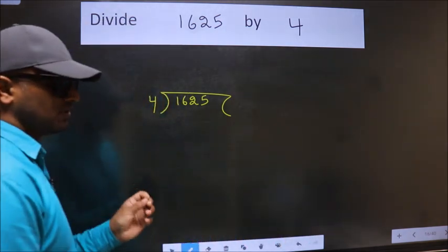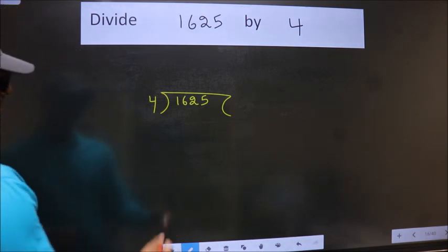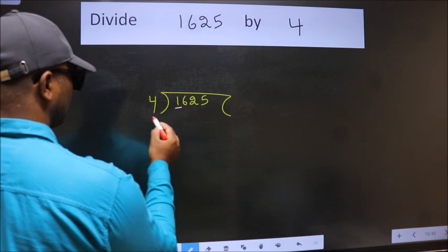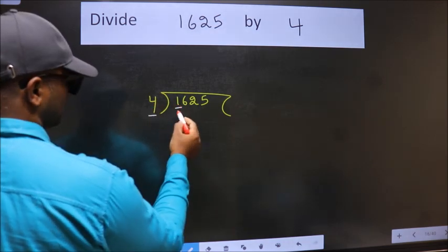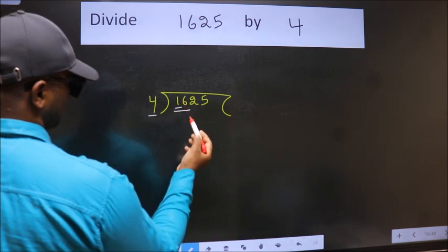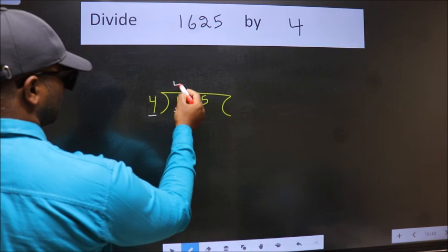This is your step 1. Next, here we have 1. 1 is smaller than 4, so we should take two numbers: 16. When do we get 16 in the 4 table? 4 times 4 is 16.